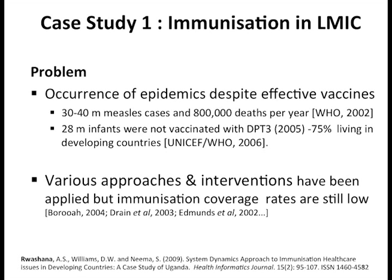The problem we're looking at is the occurrence of epidemics despite effective vaccines. We looked at an example — measles cases and the death spike back in 2006. We looked at infants that were not vaccinated, and we see that 75% of these live in developing countries. On the other hand, many approaches and interventions have been applied, but immunization coverage rates are still low.